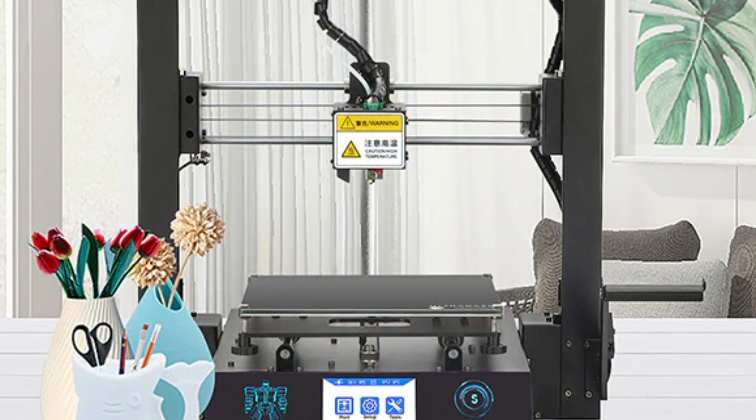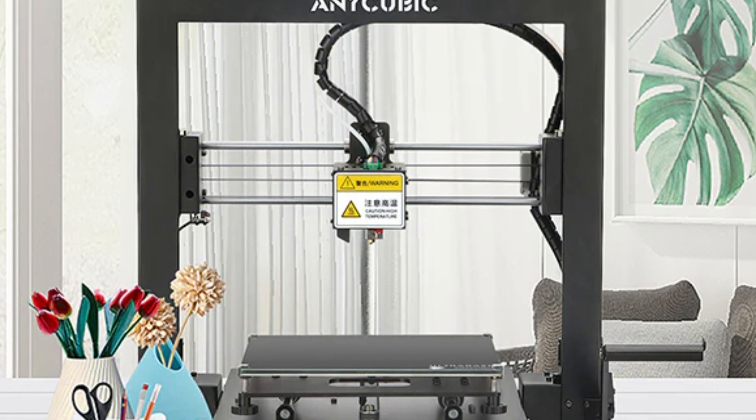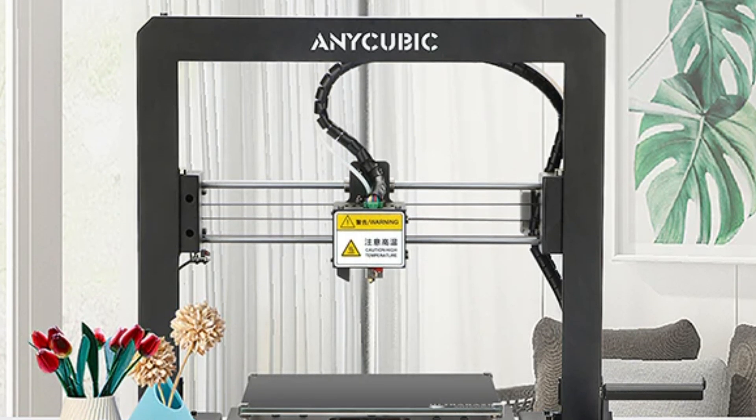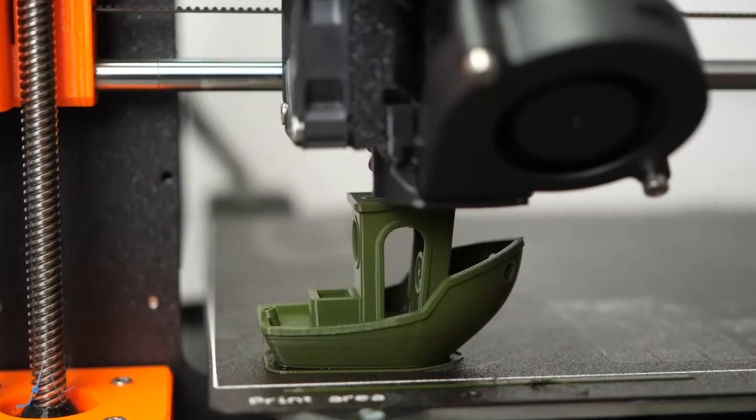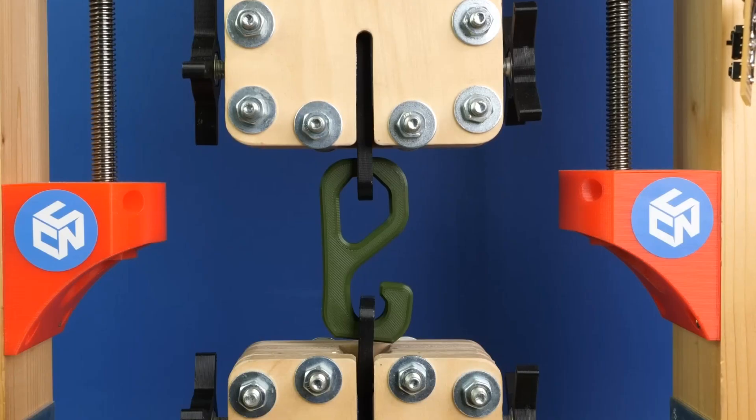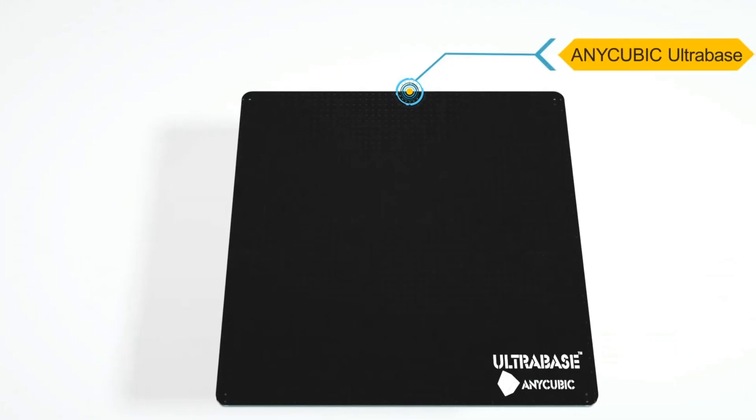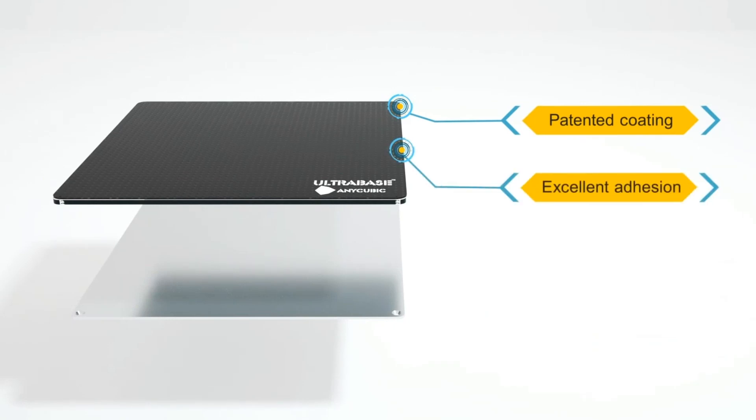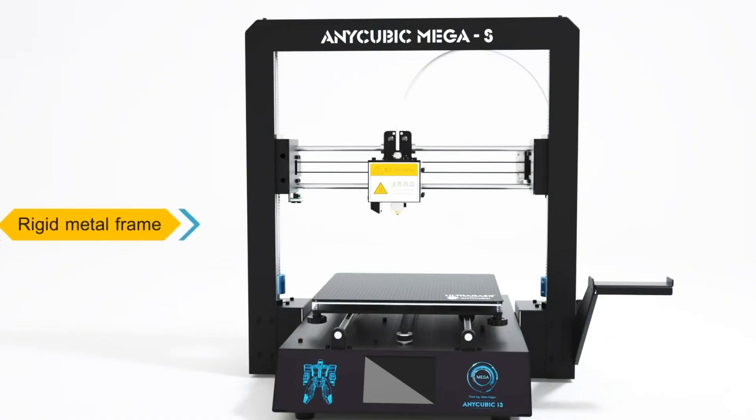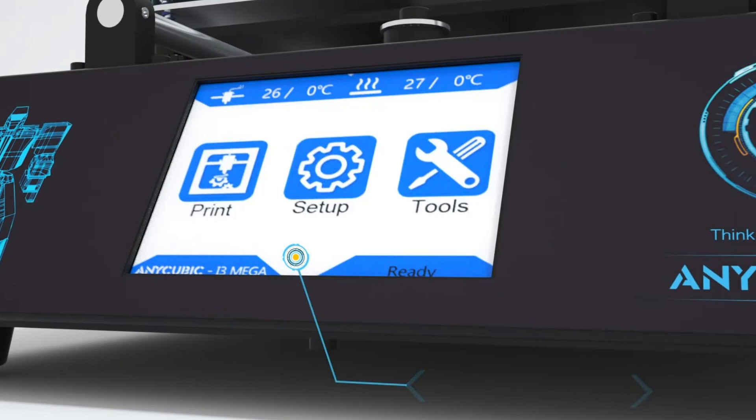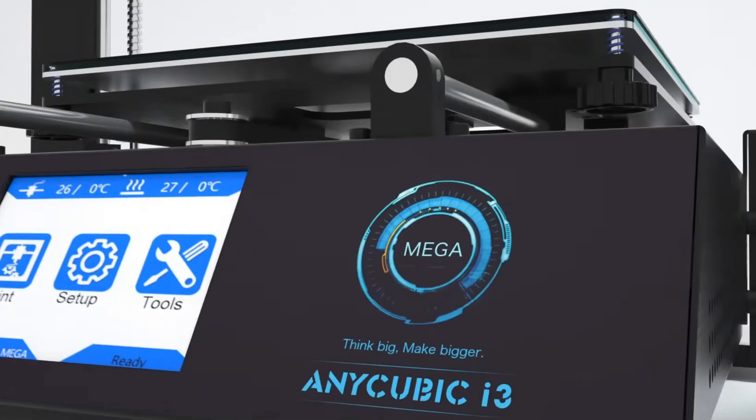The printer also features a resume printing function that restarts prints after power outages and a sensor that pauses prints and triggers an alarm when filament runs out, saving time and resources. The Anycubic Ultra Base, with its patented microporous coating, provides excellent adhesion during printing and easy removal of prints once cooled. The printer's rigid metal frame minimizes shaking, improving print quality, while the TFT touchscreen offers a responsive and user-friendly interface.